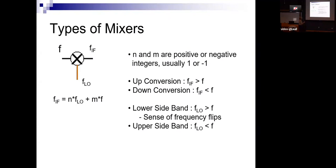What comes out of a mixer is given by the equation N×f_signal ± M×f_LO, where N and M are integers. For almost all mixers in radio astronomy, N and M are either one or minus one — so we need the difference or sum of the frequencies. Up conversion means the output frequency is higher than the input frequency; down conversion is the opposite. A lower sideband mixer has the local oscillator frequency above the input frequency; an upper sideband mixer has it below. These are just terms.